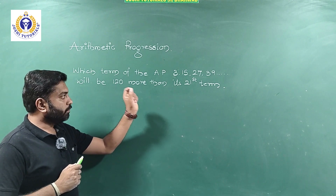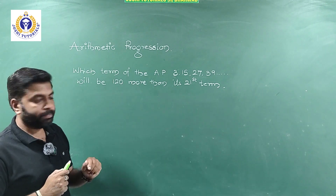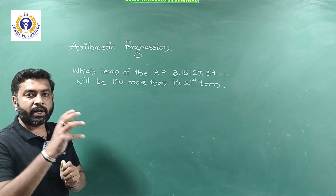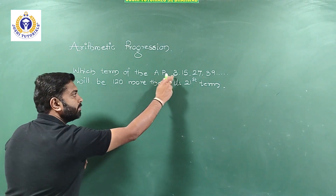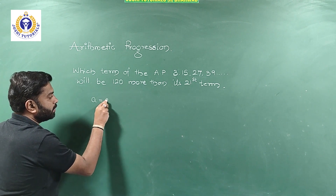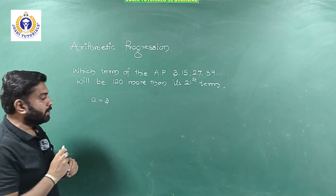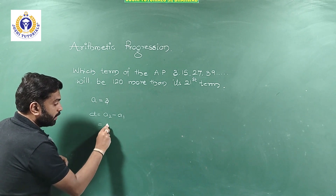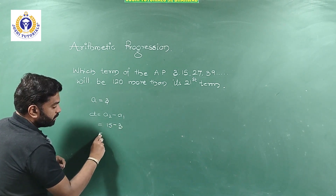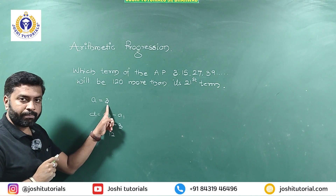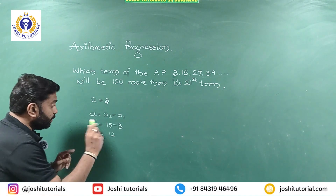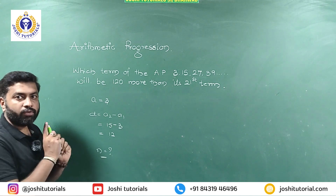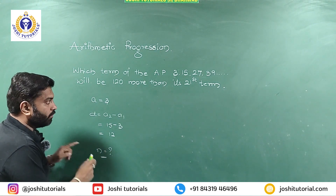First problem: Which term of the AP 3, 15, 27, 39 and so on will be 120 more than its 21st term? Let us write the given terms first. The value of a is 3. The value of d can be calculated — d is a₂ minus a₁, which is 15 minus 3, giving d = 12. Now I need to find the value of n — which term they are asking.